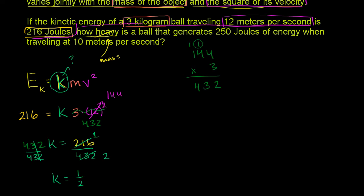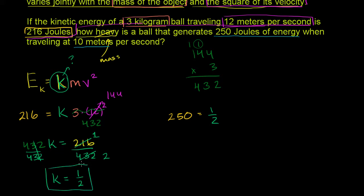Now for the second part: what is the mass of a ball that generates 250 joules of energy when traveling 10 meters per second? We set up: 250 equals 1/2 times mass times 10 squared. Ten squared is 100, and 1/2 times 100 is 50. So we get 50 times mass equals 250.